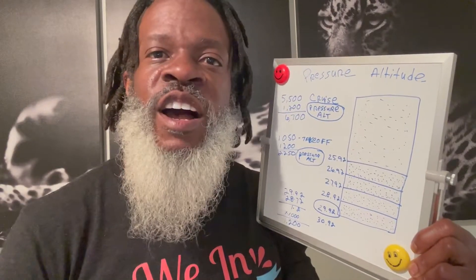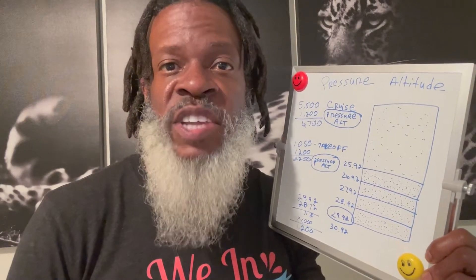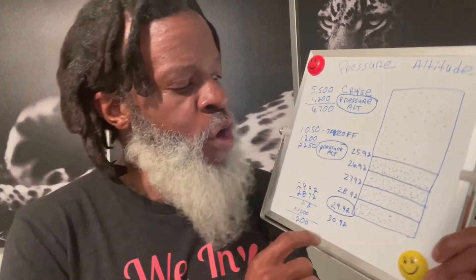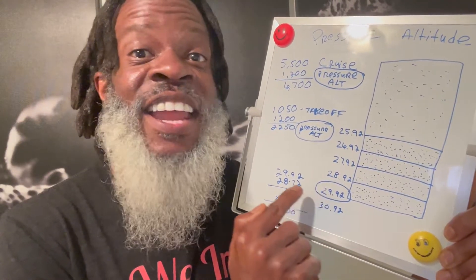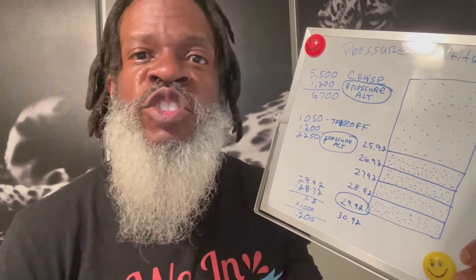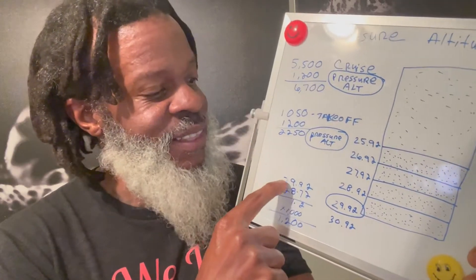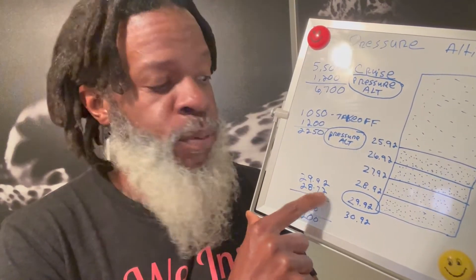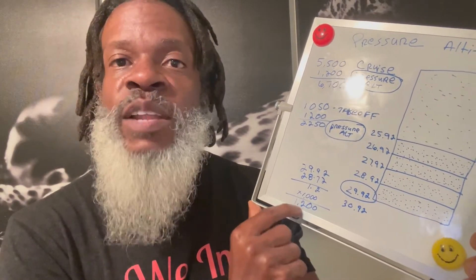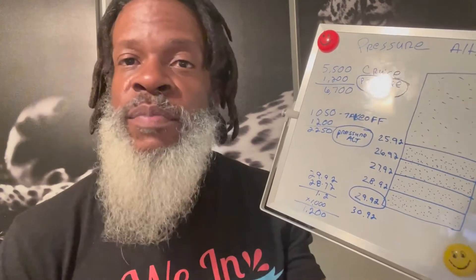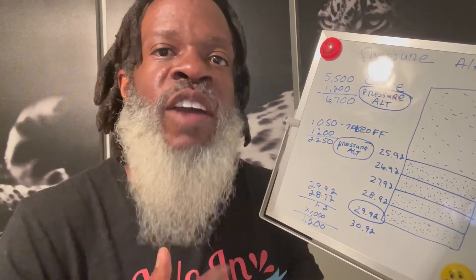Let's say they give you an altimeter setting of 28.72. You know that standard pressure is 29.92 — that number is drilled into your head. To calculate pressure altitude, you take standard pressure 29.92, subtract the altimeter setting 28.72, and you get 1.20. Multiply that by 1,000 and you get 1,200 feet. So that 1,200 is the adjustment you need — you're not quite at your pressure altitude yet, but you use that calculation to get there.